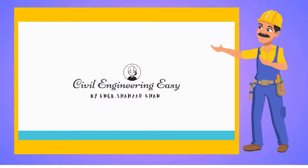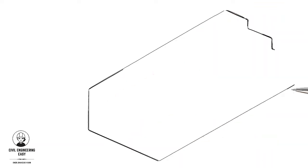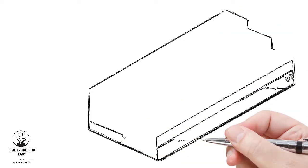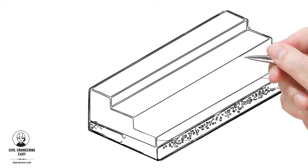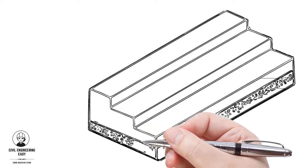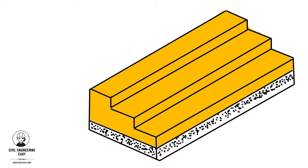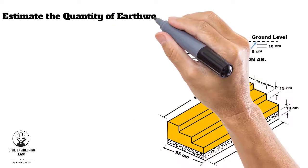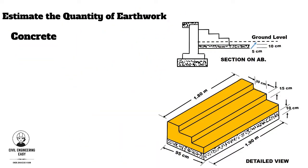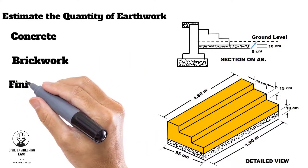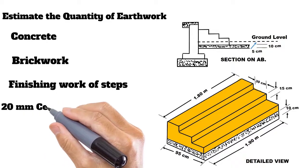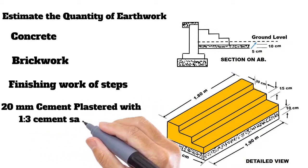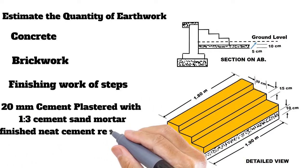Hi, welcome back to Civil Engineering Easy YouTube channel with a new lecture. Steps are usually constructed when the construction of the building has progressed. The artwork in the foundation for the step needs excavation. We will estimate the quantity of earthwork, concrete, brickwork, and finishing work of different types of steps from the drawing. Surfaces and steps are 20 mm plastered with 1:3 sand mortar finish near cement rendering.